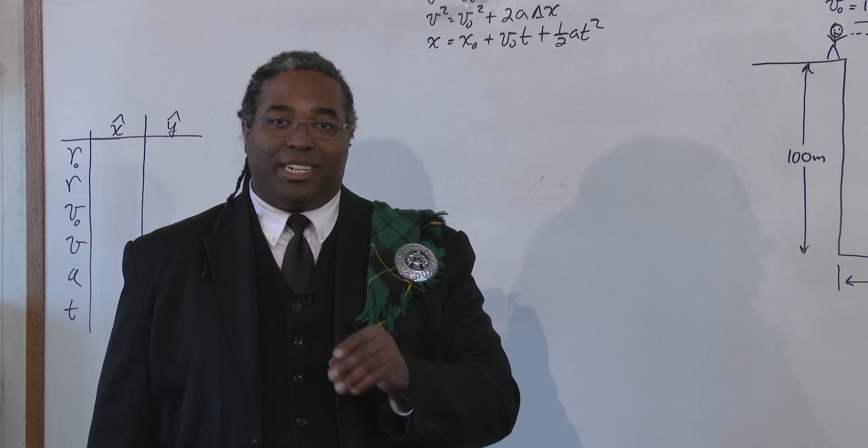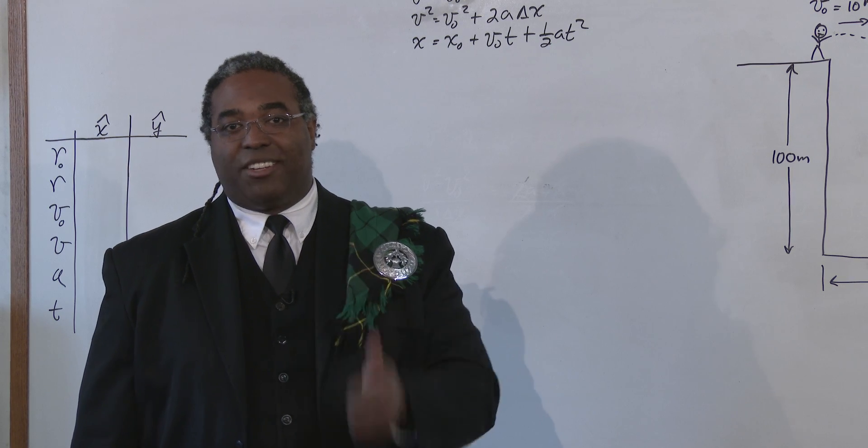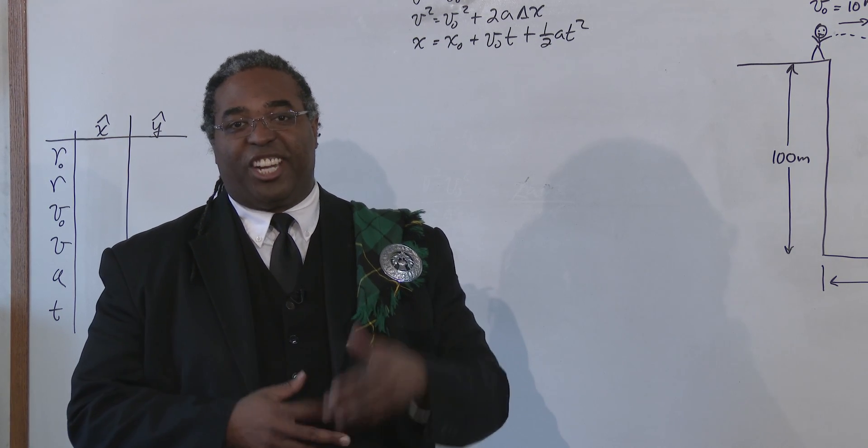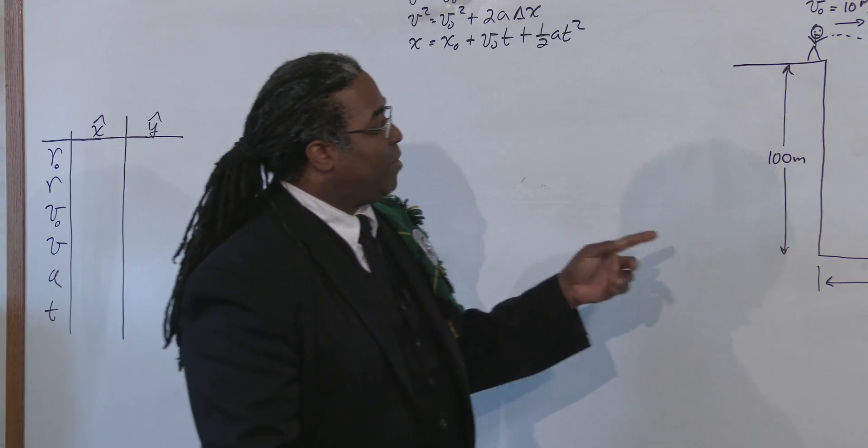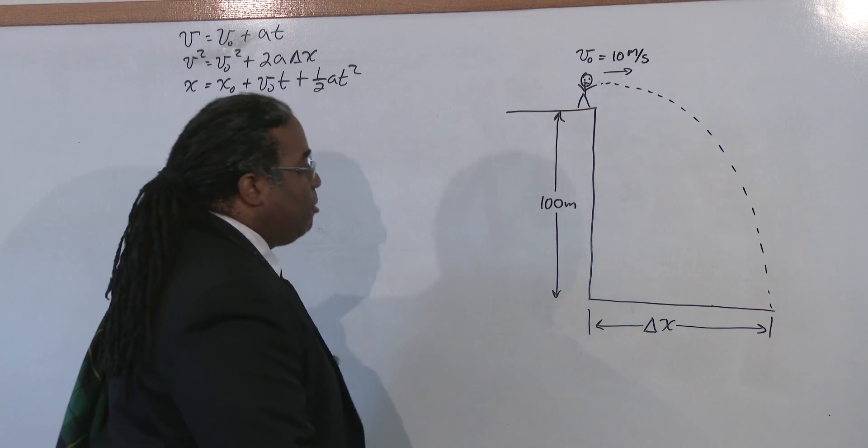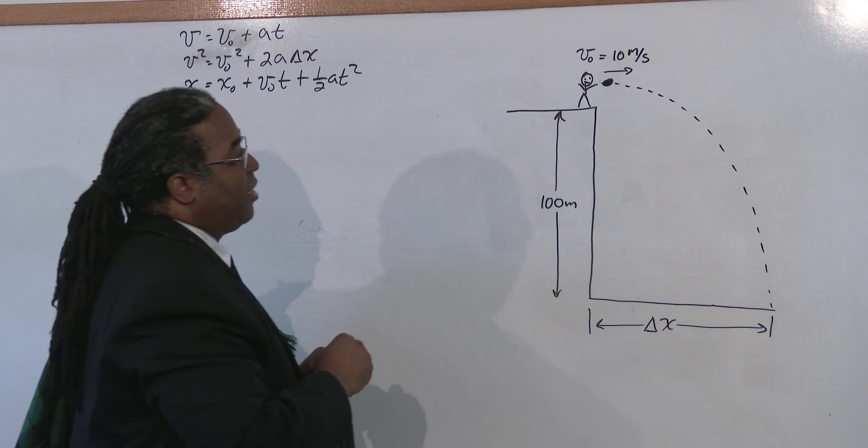And you need to remember that because that helps you solve the problems. But in the y direction, you have a change in velocity because of gravity. The force of gravity is changing the velocity of the object. So what we have here is a person standing on a cliff and the person throws a projectile, well, we'll just say a ball horizontally off the cliff.